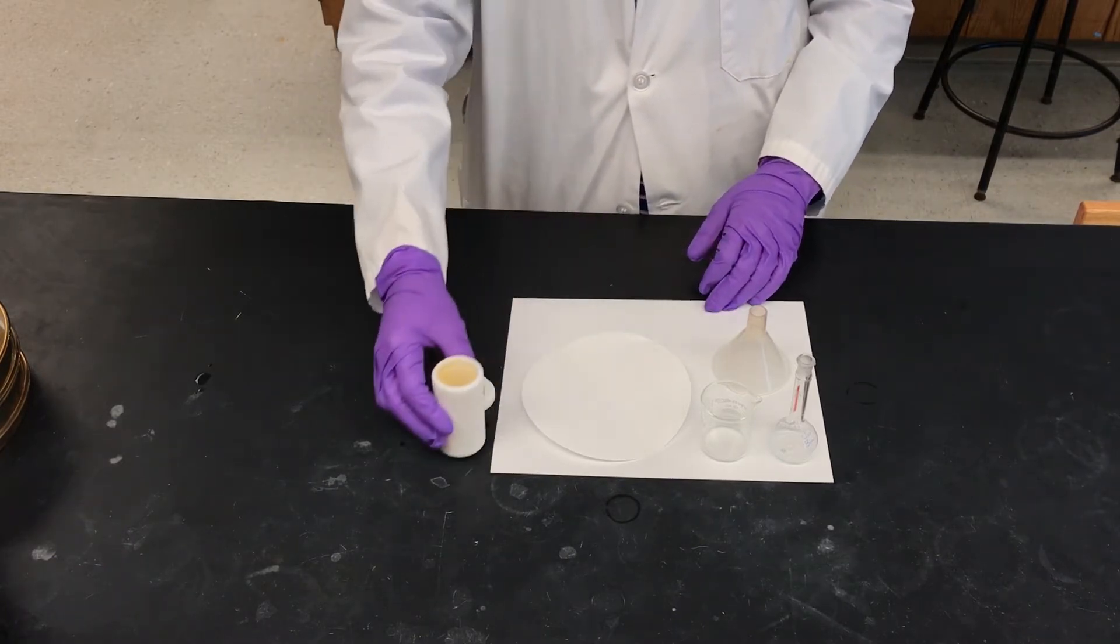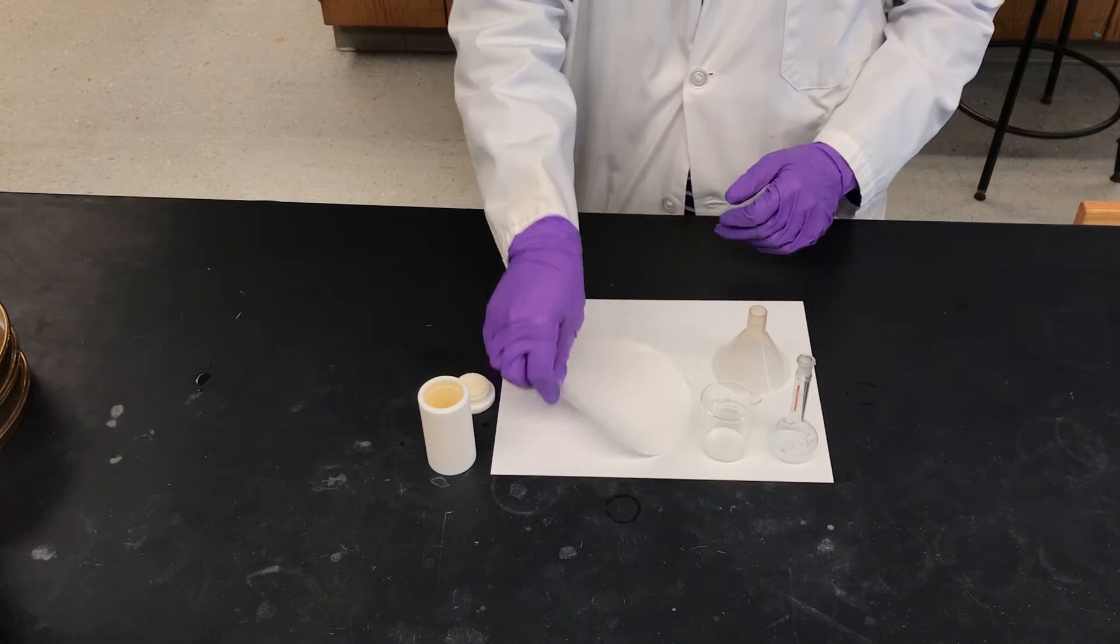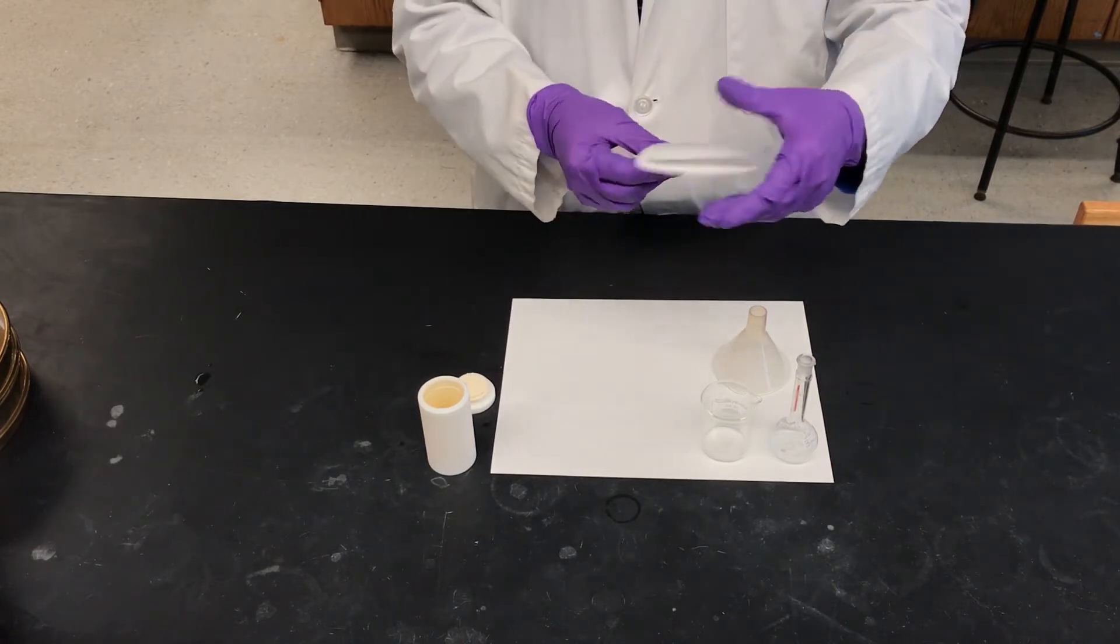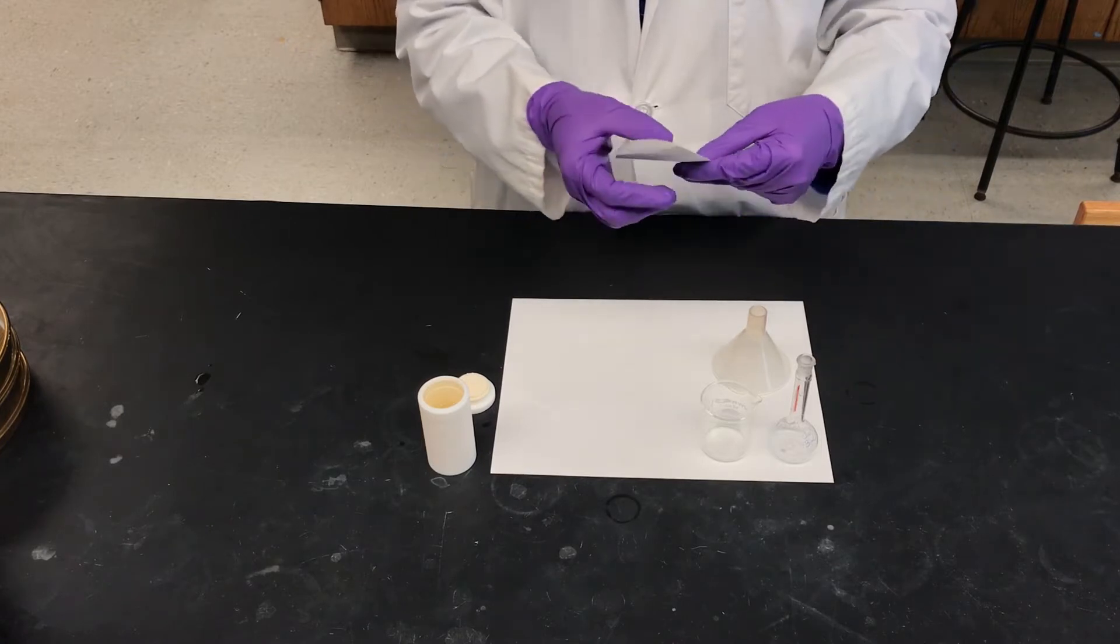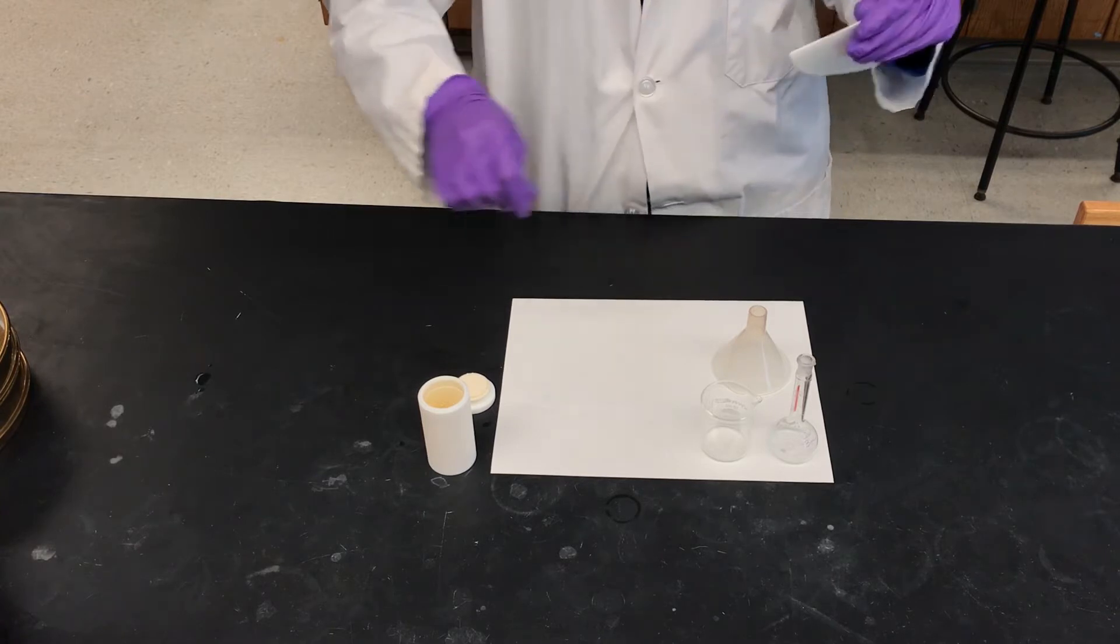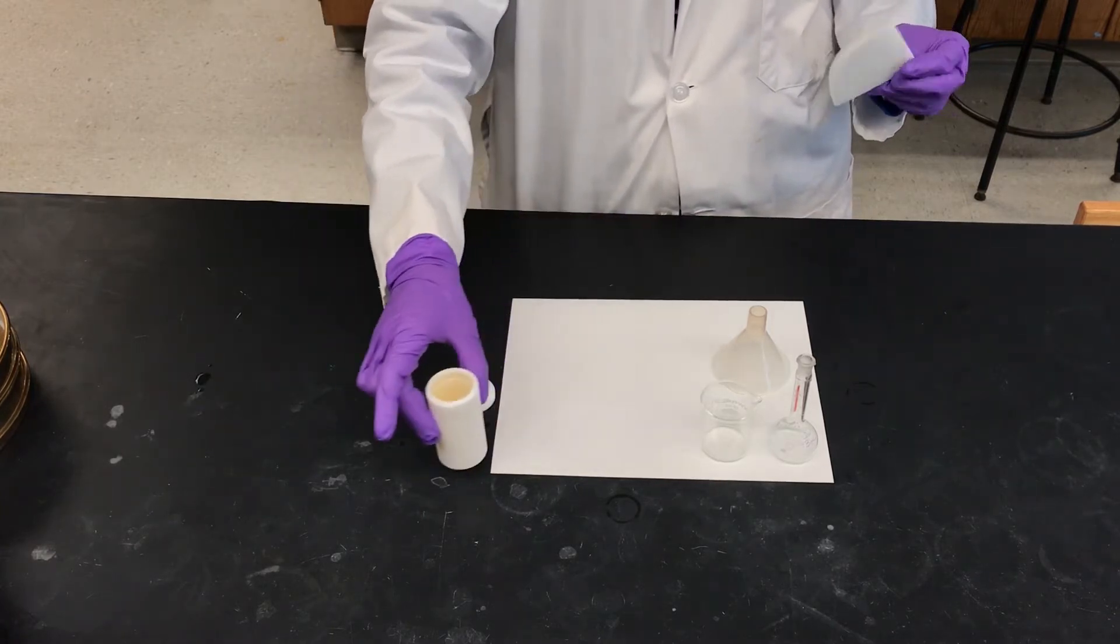So we do need to filter this sample. I'm going to fold up my filter paper. This adds another level of complexity when it comes to quantitative transfer, because now not only do we have to get everything that's in our PTFE liner into the filter paper and then into the beaker, but then we need to get everything from the beaker into our volumetric flask.